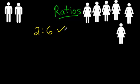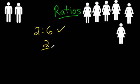That's the best way to say it. That is the first way to write a ratio. There are two more ways you can do this. You can simply write this as a fraction — fractions look like this. Put the two on the top, the six on the bottom, done.